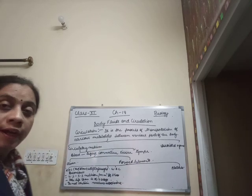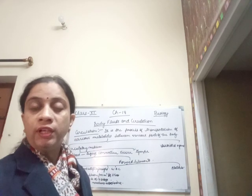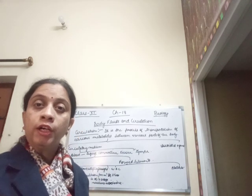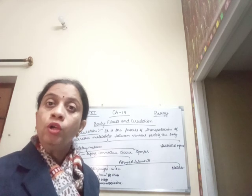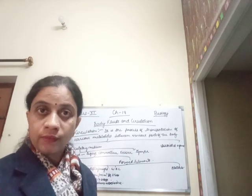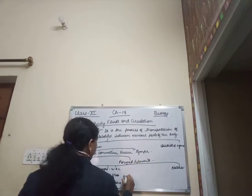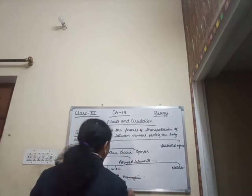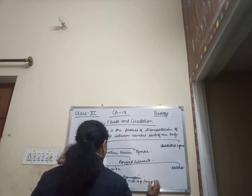The whole volume of the erythrocytes is filled with hemoglobin, which is a colored pigment. It has a higher affinity or tendency to bind with oxygen. In an adult, the range of hemoglobin is 12 to 16 grams per 100 ml of blood.